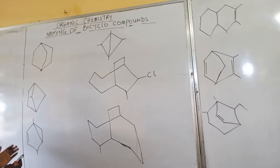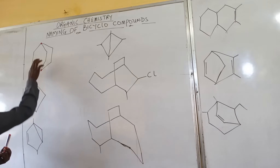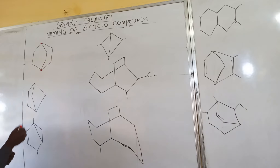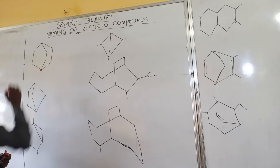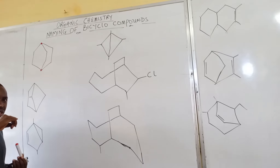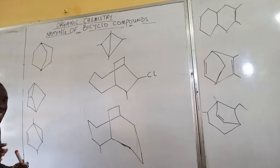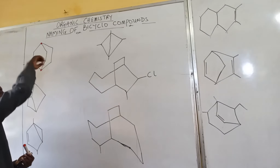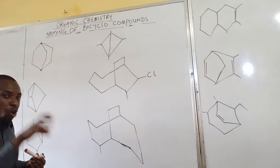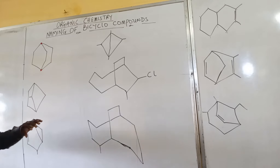Now we start from this first compound here. To name this bicycle compound, we check how many rings we have — two rings. We look for the bridgehead, which you can see right here on the board. Then we count the total number of carbons in this compound: one, two, three, four, five, six, seven, eight — so it's 'oct,' which is eight. There is no functional group, meaning this is an alkane, so the parent name is octane.